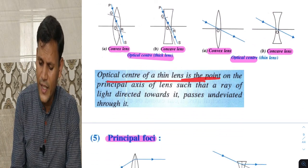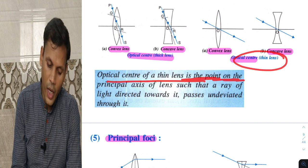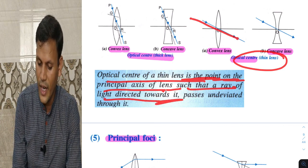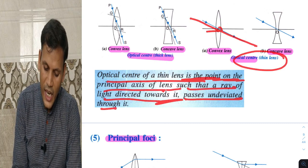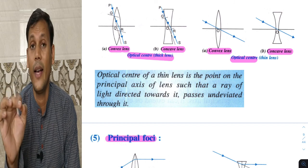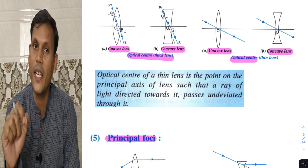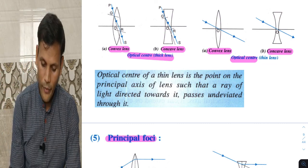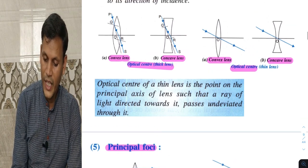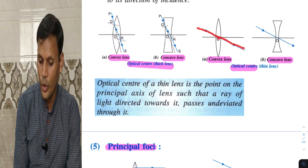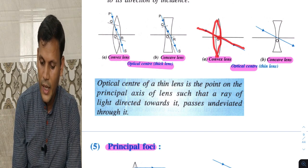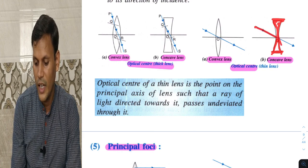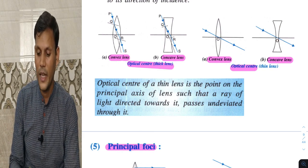The optical center of a thin lens is the point on the principal axis such that a ray of light directed towards it passes straight through undeviated. A beam passing through the optical center of a convex or concave lens passes undeviated.